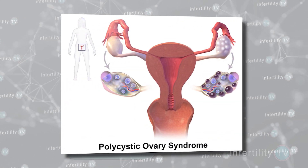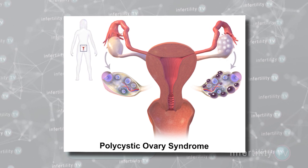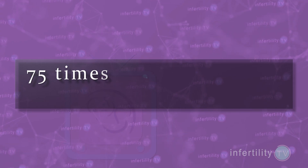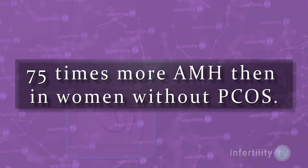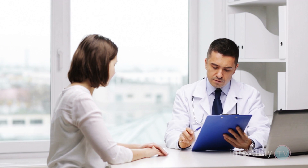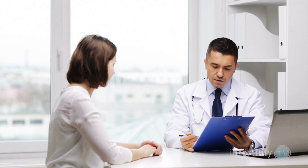High AMH is common in PCOS. In women with PCOS, each follicle produces 75 times more AMH than in women without PCOS. As a result, women with PCOS often have much higher levels of AMH than you would expect given their age. Doctors can therefore use AMH to help diagnose PCOS.